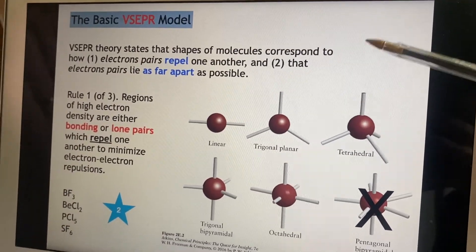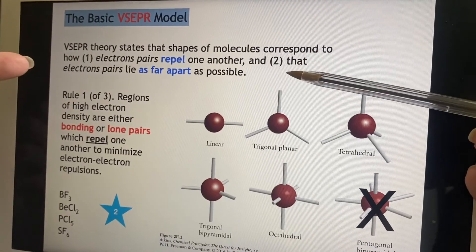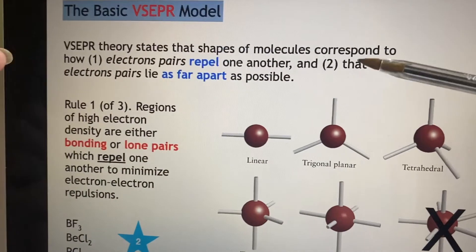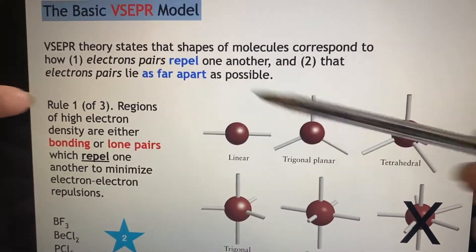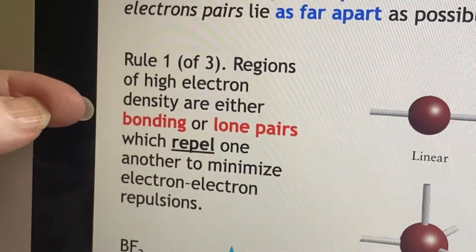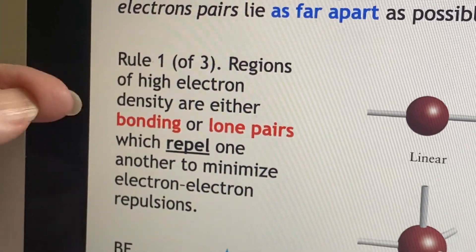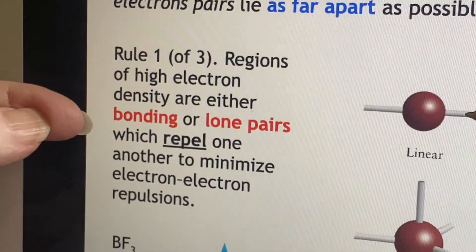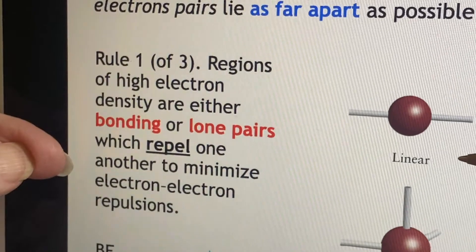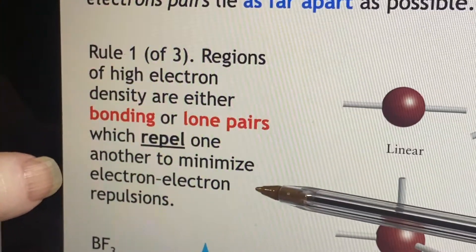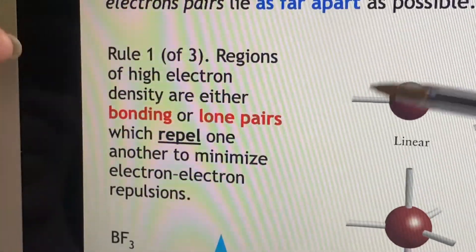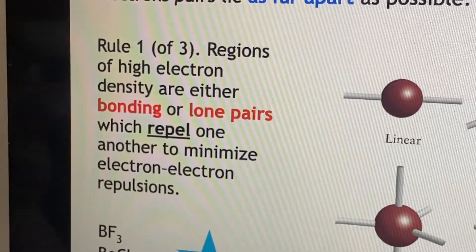Let's dig in some more to the VSEPR model. The electron pairs are going to repel each other, and they're going to get as far apart as possible. So there are three rules. The first one is that these regions of electron density, they're going to be either bonding or lone pairs. It does not matter. Either way, they're going to repel each other to try to minimize the amount of energy within electron-electron repulsion. So it's all about minimizing the energy of the shape.